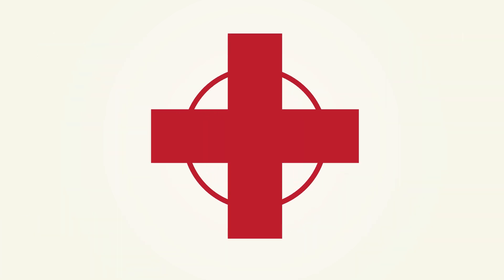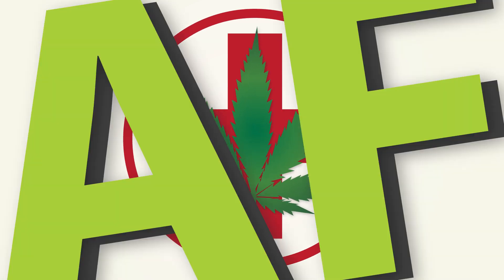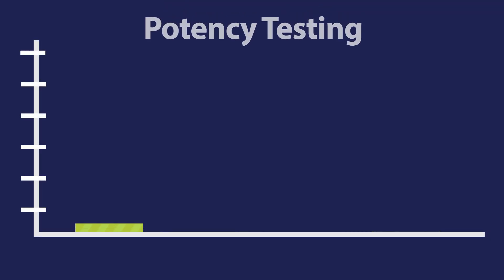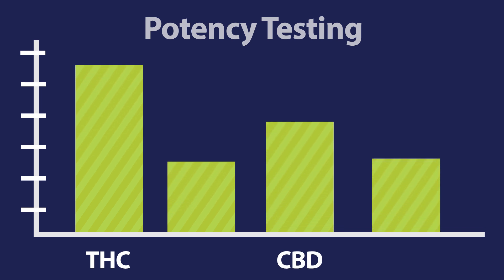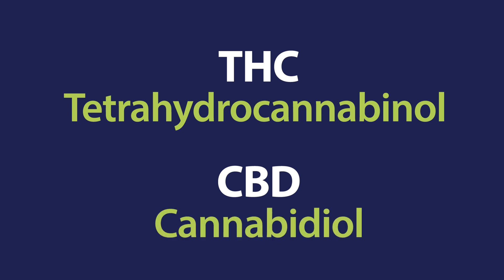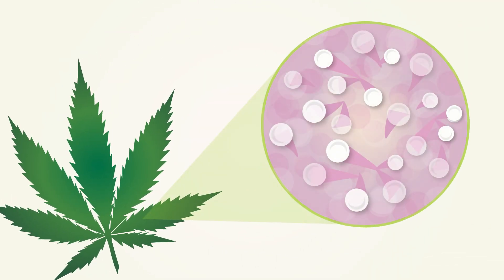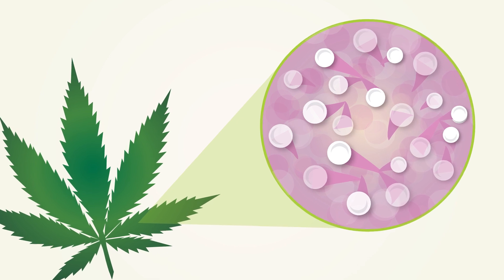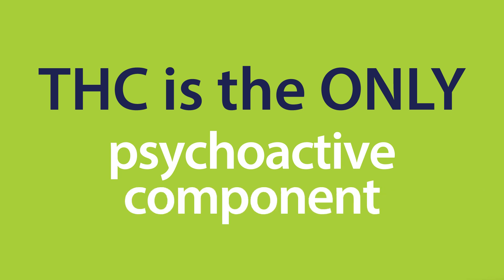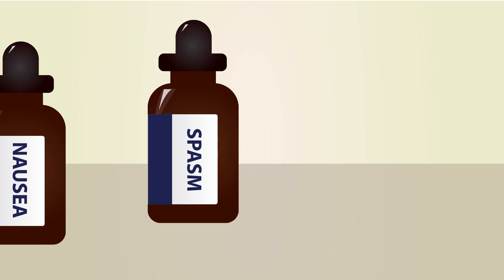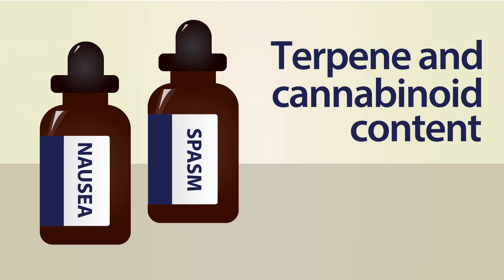Analytical testing is critical to ensure that patients receive safe and effective products. Potency testing measures the levels of certain compounds in the end product, including cannabinoids like tetrahydrocannabinol (THC) and cannabidiol (CBD). Terpenes and cannabinoids are chemical compounds produced in the trichomes of cannabis flowers. They are believed to deliver most of the curative effects of cannabis. THC is the only psychoactive component in cannabis, making it a primary focus for potency testing.